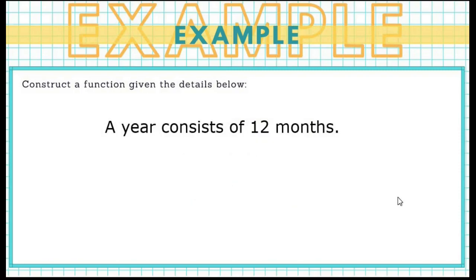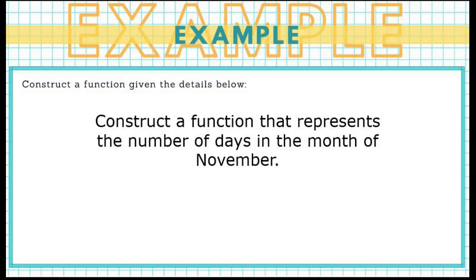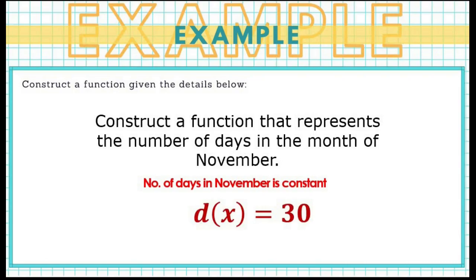Another example: a year consists of 12 months. There are no explicit keywords, but this sentence expresses something factual — a year always consists of 12 months, and this statement will not change. Therefore, we represent it as a constant function m of x equals 12, using the letter m to represent the number of months. Similarly, the number of days in November is constant and not changing, so we represent it as d of x equals 30.